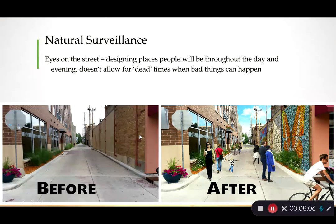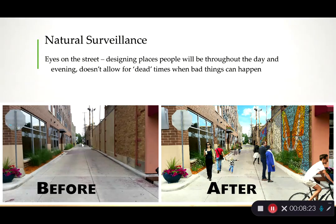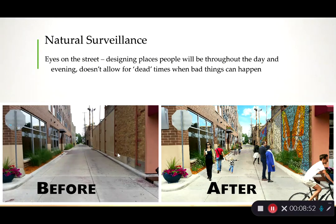Part of natural surveillance is putting eyes on the street. By designing places where people actually want to be, you increase activity and have more people watching the space. A typical alley is dead space — not very attractive. But by improving landscaping and adding murals, you can activate it as a walkway, turning what had been a dead space where unpleasant things could happen into an active, vibrant pedestrian access point.